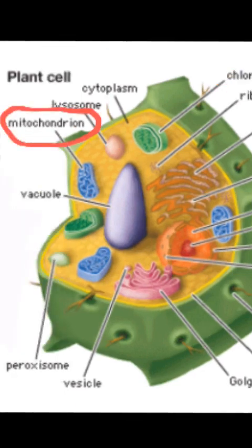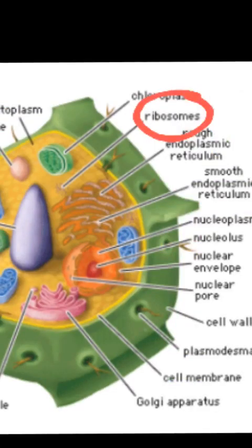Mitochondria helps with production of energy through oxidative phosphorylation. Ribosomes, made of both RNA and protein, can read RNA and translate that into a genetic code, which can grow to long chains that fold to form proteins.